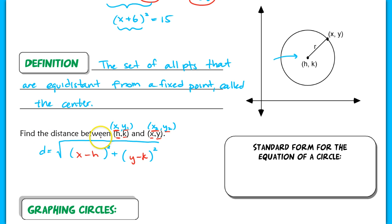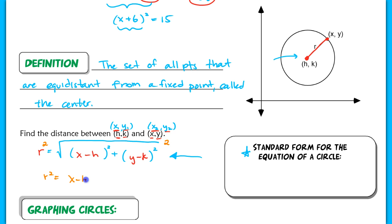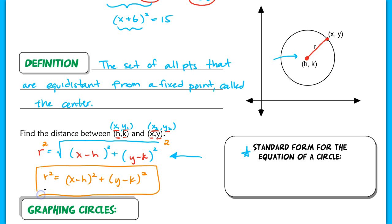That distance is really the radius. Let me replace d with r, because that's the radius — the distance between h, k and x, y. The standard form for the equation of a circle comes from this idea. We found the distance, which is the radius, between the point on a circle and our center. If we square both sides, the radical drops and leaves us with the inside: r squared equals (x minus h) squared plus (y minus k) squared. This is the equation of a circle — the standard form.